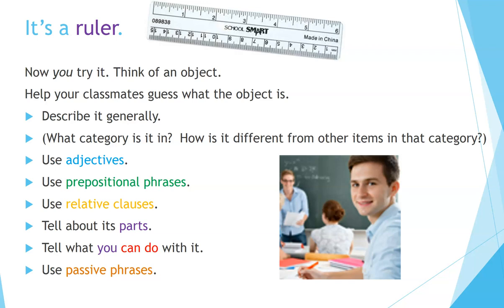Now, you try it. Think of an object and help your classmates guess what that object is. Describe it generally — what category is it in? How is it different from other items in that category? Use adjectives. Use prepositional phrases. Use relative clauses. Tell about its parts. Tell what you can do with it. Use passive phrases. You don't have to use all of these, but use some of them.